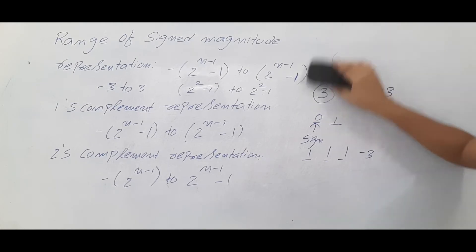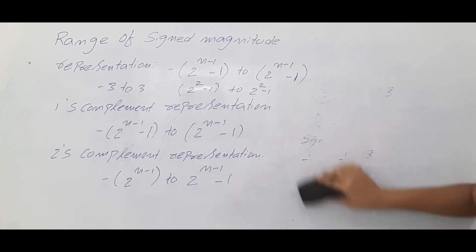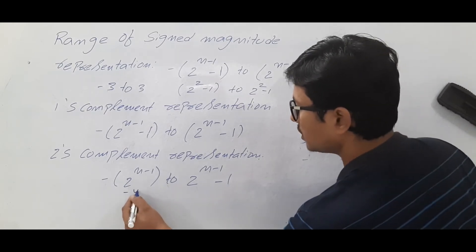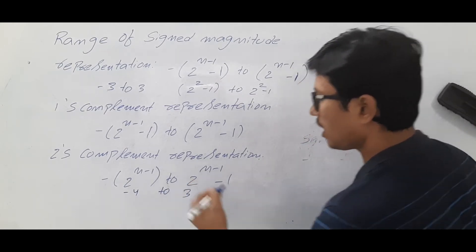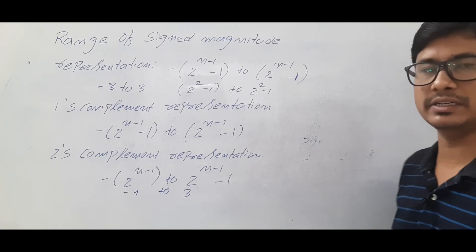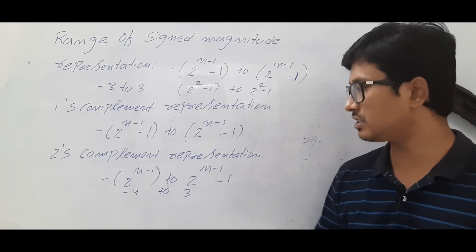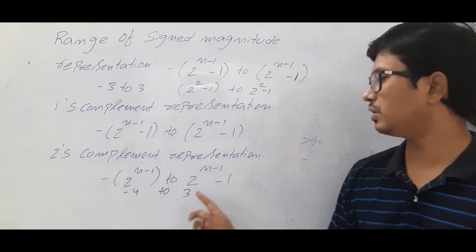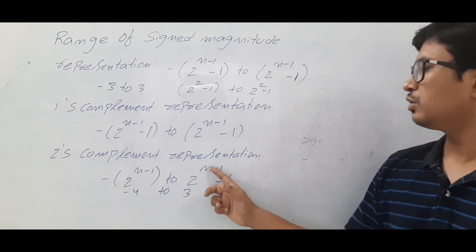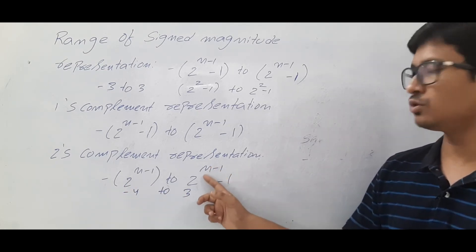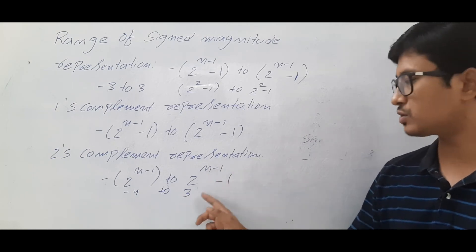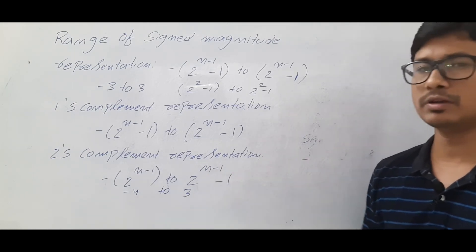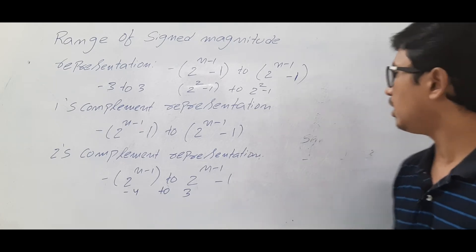Why can two's complement represent minus 4 to plus 3 with 3 bits? Out of 3 bits, 1 bit is for the sign, leaving 2 bits. So minus 2^(n-1) = minus 2^2 = minus 4, and the maximum is 2^2 - 1 = 3. So the range is minus 4 to plus 3.